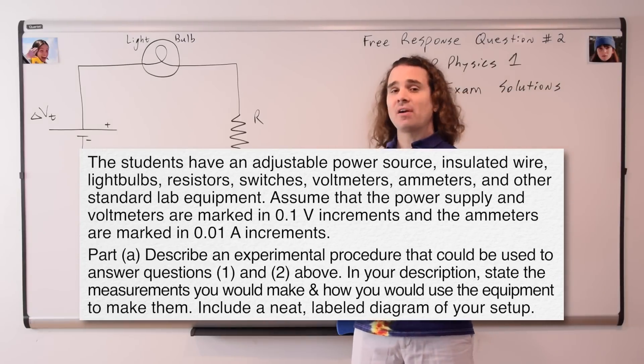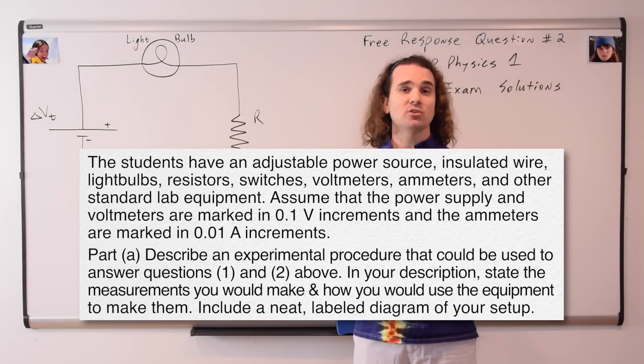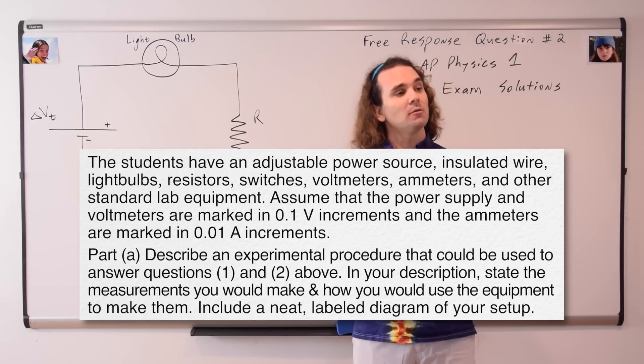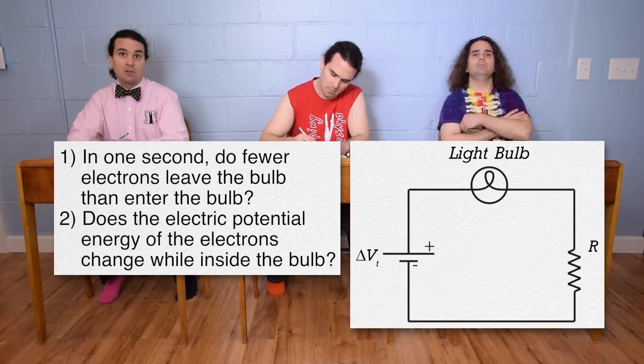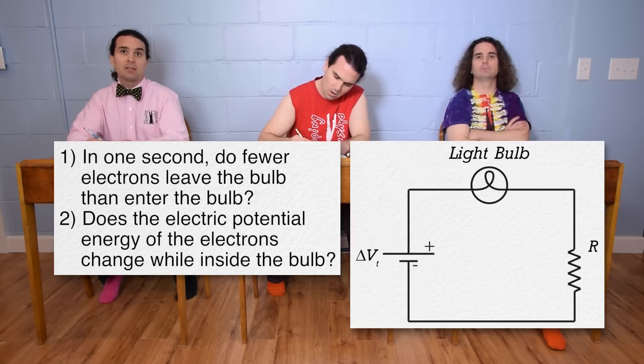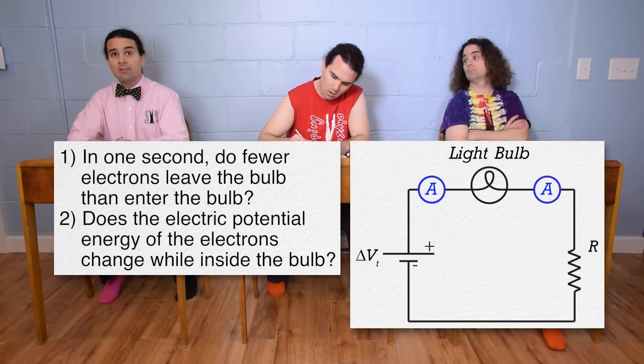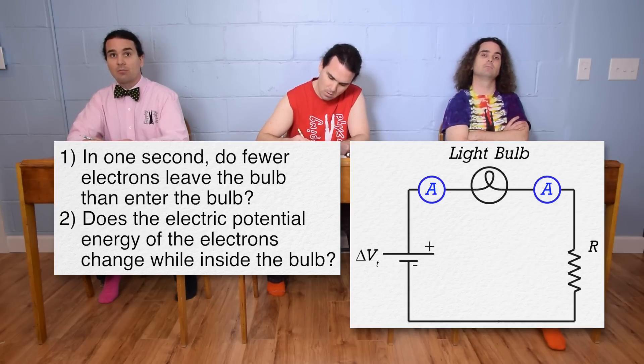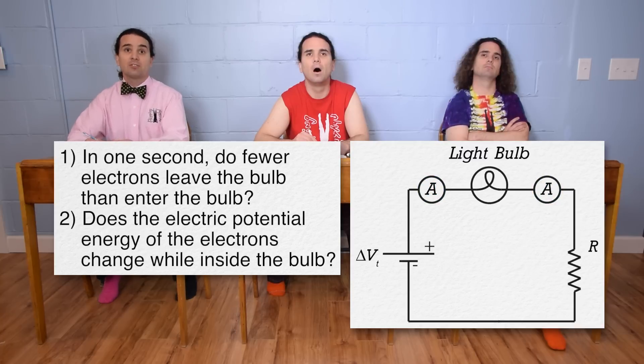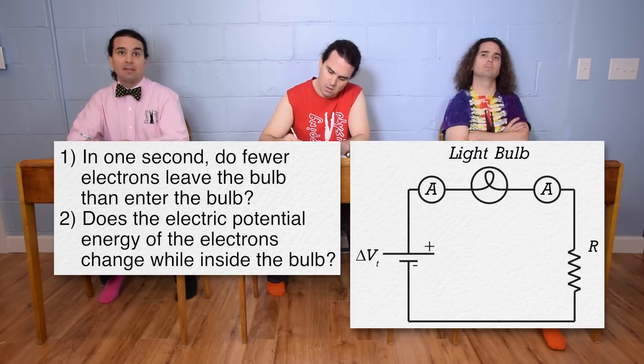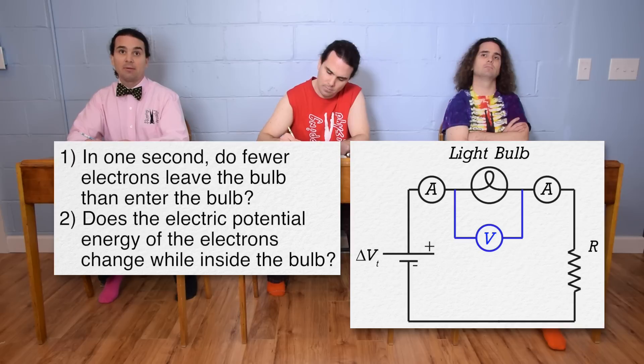Let's now add to our circuit diagram the items we would need to add to our circuit in order to answer the two questions. Billy? The number of electrons that enter and leave the light bulb in one second can be measured using the current. So we need ammeters because they measure current. Ammeters go in series with the circuit element you are trying to measure the current through. So place two ammeters in the circuit, one before and one after the light bulb. Voltmeters are used to measure electric potential difference and they are placed in parallel across circuit elements. So place a voltmeter in parallel across the light bulb.